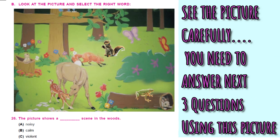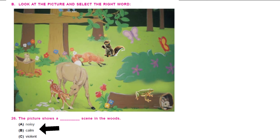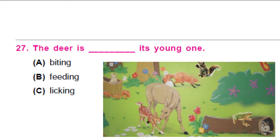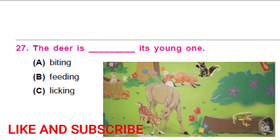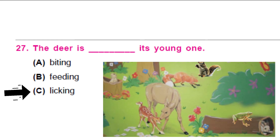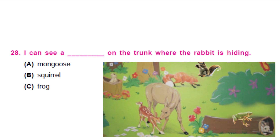Now let's see this picture and answer the following questions. The picture shows a dash seen in the woods — is it noisy, calm or violent? See the picture and tell me what the right answer would be. It is a calm scene in the woods, because all the animals are happy playing in this environment. Next question: the deer is dash its young one. Look at the picture and tell me if the deer is biting, feeding or licking. Yes, the deer is licking its young one — option C is the right answer. I can see a dash on the trunk where the rabbit is hiding. It is a frog that is on the trunk where the rabbit is hiding. Well done.